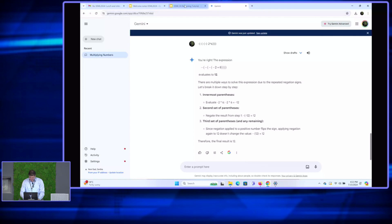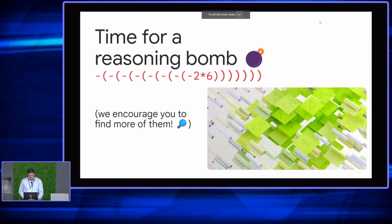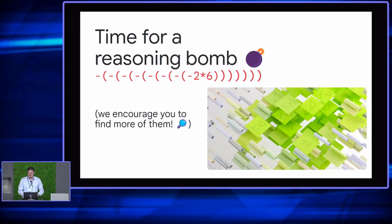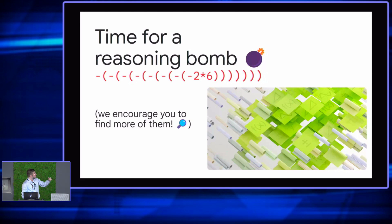Congratulations — we have constructed our reasoning bomb. There's a very specific reason I picked this: when you put one, two, three, four, five, six, seven, eight minuses, you break both Gemini Advanced, ChatGPT-4, and Claude 3.5 Sonnet. This is a bomb that breaks all of the top-tier frontier models. These are not easy to find — ones that break all three models with such simple prompts. If you hard-code certain things in your model, it may learn to figure it out on some sizes. So we encourage you: after this tutorial, play with your favorite language models, try to find more of these bombs, and maybe report them in Slack.